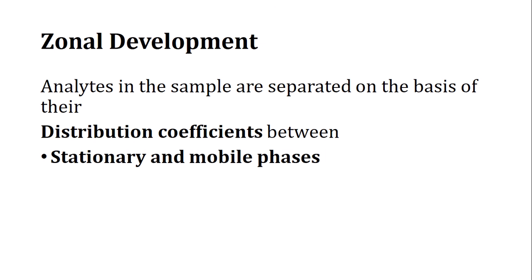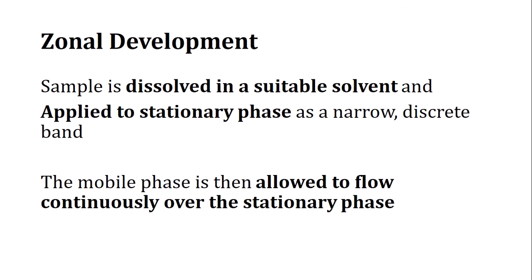Each analyte has some affinity for either the mobile or stationary phase. When using multiple analytes, they differ in their distribution coefficient relative to the stationary and mobile phases. The sample is dissolved in a solvent and applied to the stationary phase as a narrow discrete band, using a minimum amount of sample. The mobile phase then flows continuously over the stationary phase.